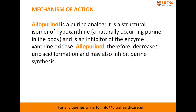The mechanism of action involves allopurinol acting as a purine analogue. It is a structural isomer of hypoxanthine, a naturally occurring purine in the body. Allopurinol inhibits the enzymes xanthine oxidase and proteins involved in purine synthesis, and by binding these two enzymes it decreases uric acid formation.